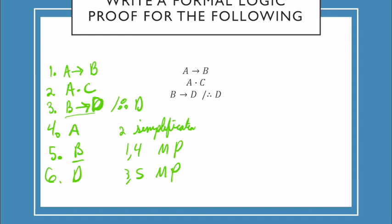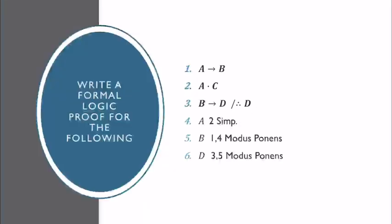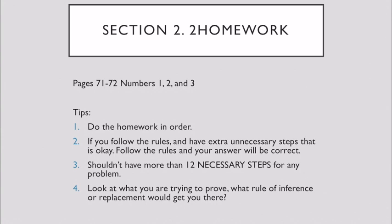Let's take a look at what I assigned for the homework. Here's our section 2.2 homework, pages 71-72, numbers 1, 2, and 3. I know that seems like quite a bit, but it would be really helpful in your ability to gain the skills to work through these logic proofs. First, I recommend do the homework in order. Start with problem 1, 2, 3, and do problem A before you do problem C, because it's working to help you build those skills.